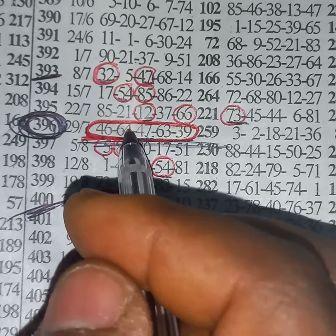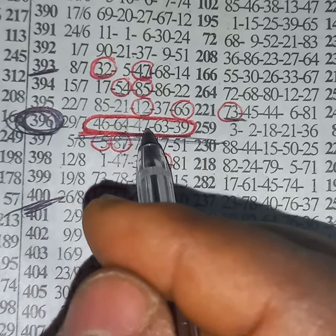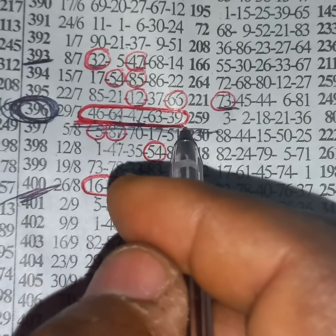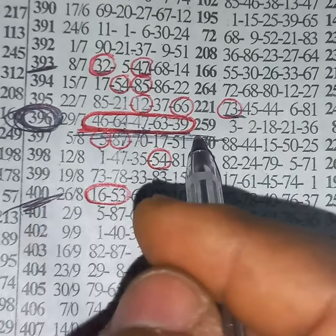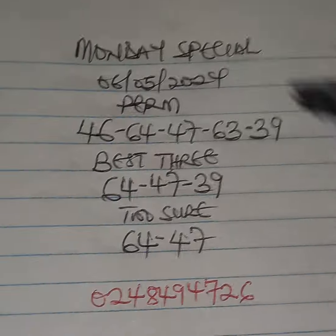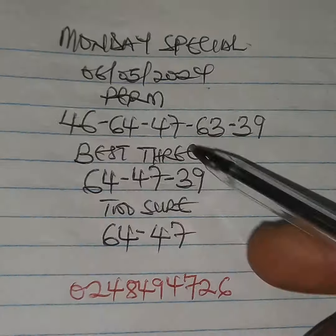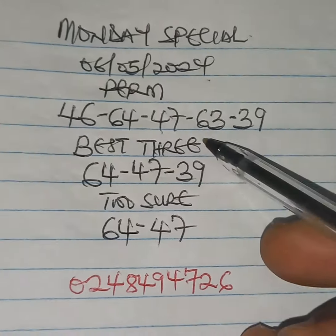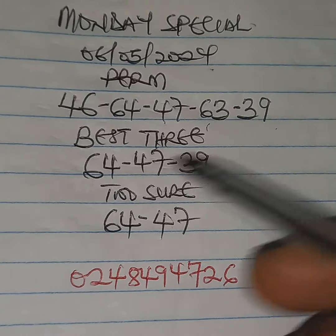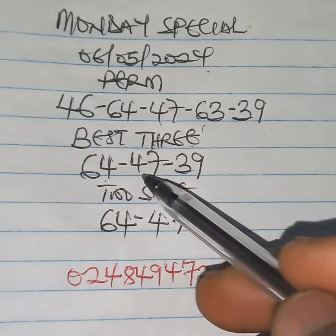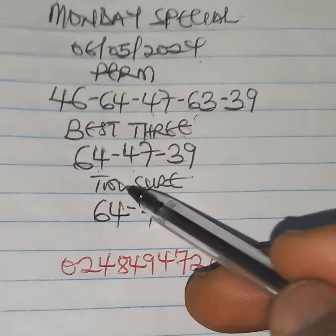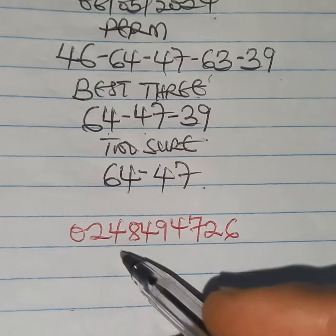So 47-64 to show, 47-64-39 best trade, and after that we'll pay him the event. So Monday special: we are coming in 46-64-47-63-39 best trade, 64-47-39, then two shot is 64-47. So if you want me to stay the numbers for you...